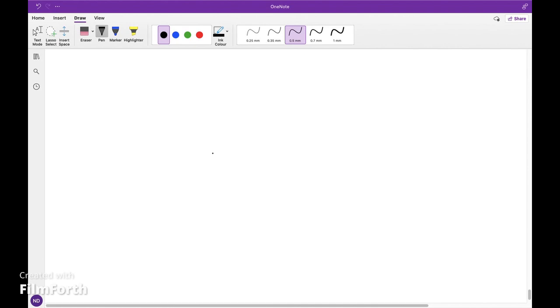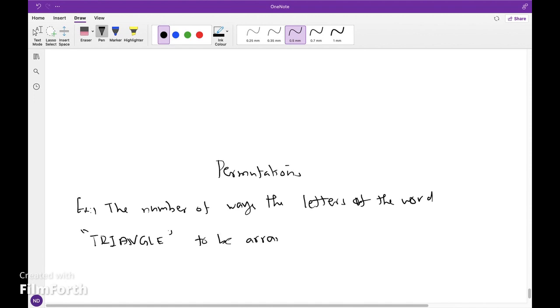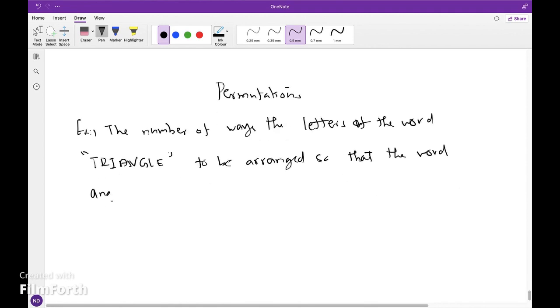Welcome to Insert Online, continuation of the previous videos on permutations. Example: The number of ways the letters of the word TRIANGLE can be arranged so that the word ANGLE will always be present.